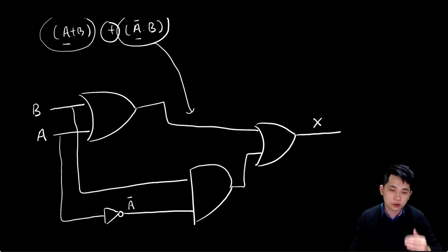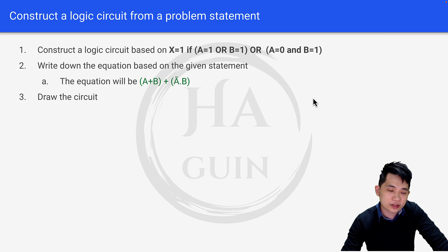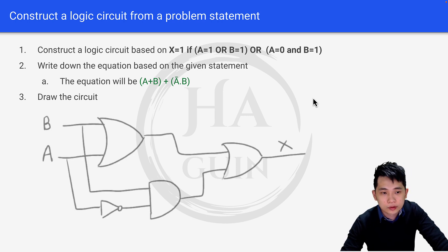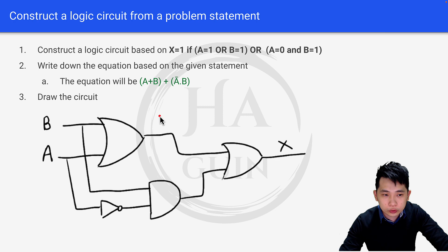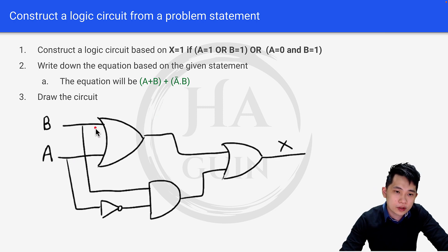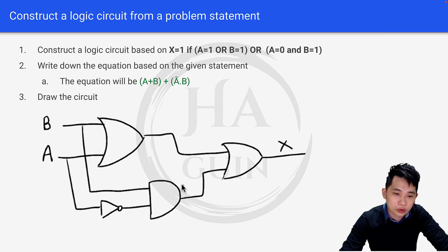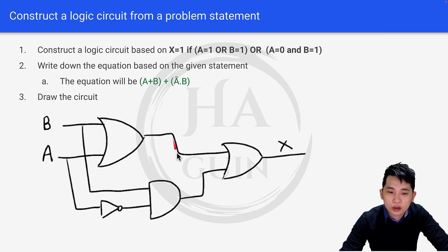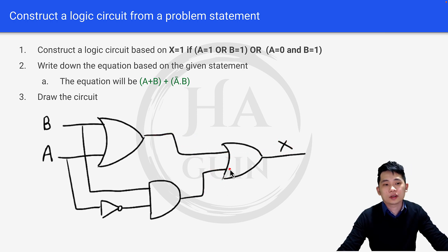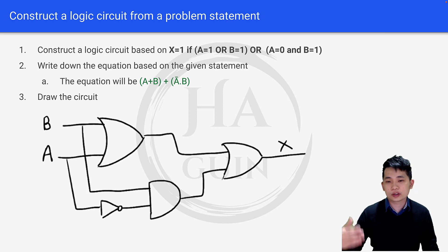Let's go back to the slides for a quick recap. This is how the circuit looks as I drew it on my iPad. We have a and b as inputs. The OR gate handles a + b. A NOT gate on a forms a-inverse, which goes with b into an AND gate for a-inverse · b. Both outputs then feed into a final OR gate, giving output x.